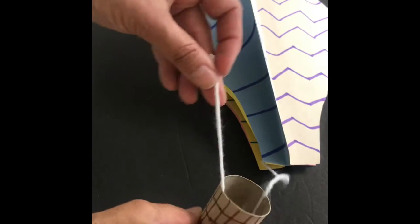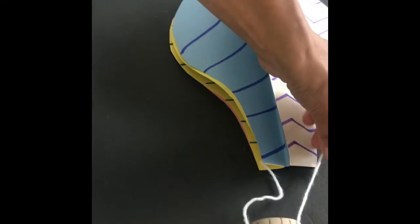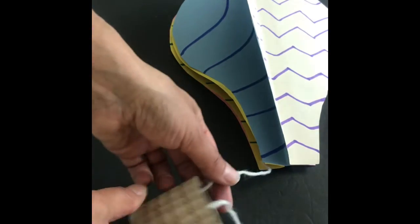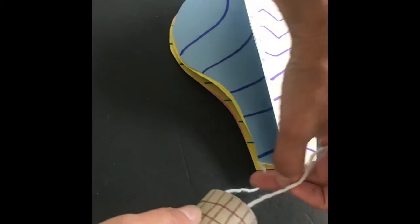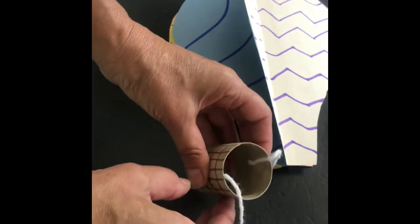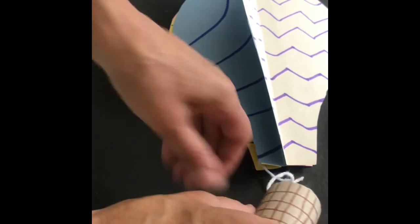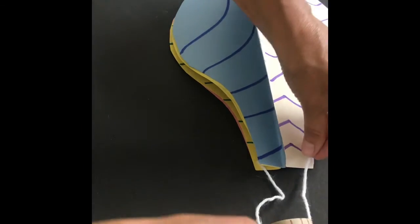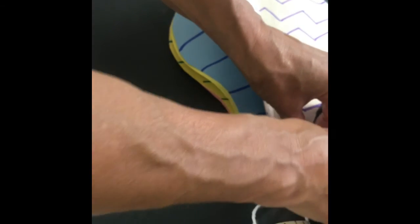The next step is to take your basket and attach it to your hot air balloon. I used some yarn, two of the same lengths, taped it on the inside of the toilet paper roll, and then taped it to the outside edge of the hot air balloon.